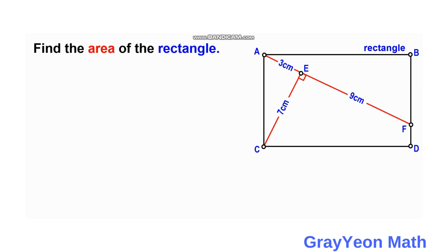Since we are finding the area of this rectangle, we can let AB equal small letter a and AC equal b. So the area is simply a times b.